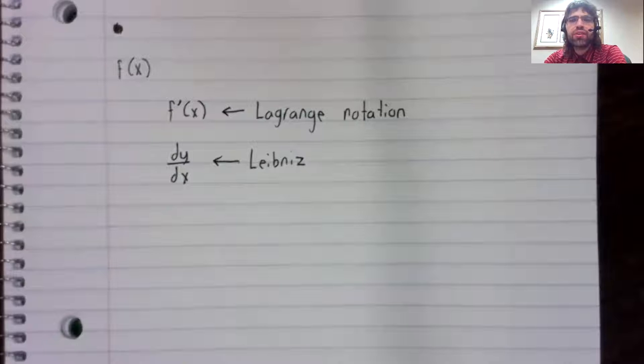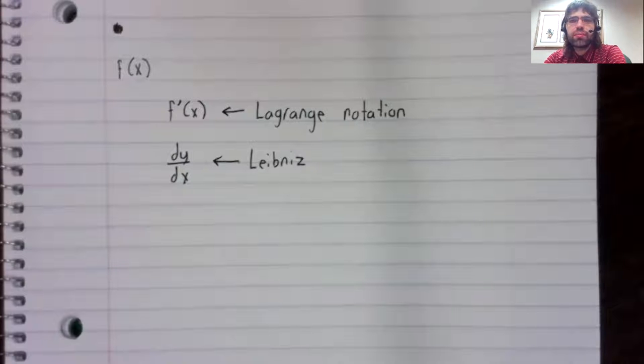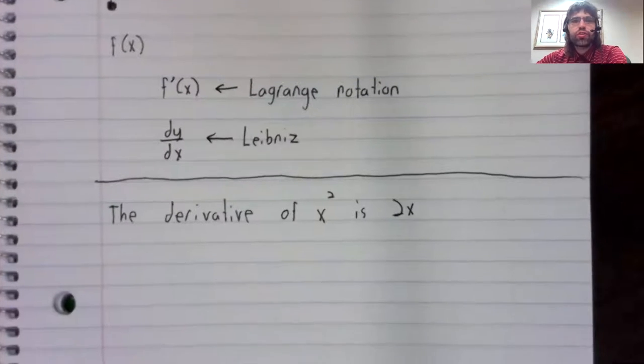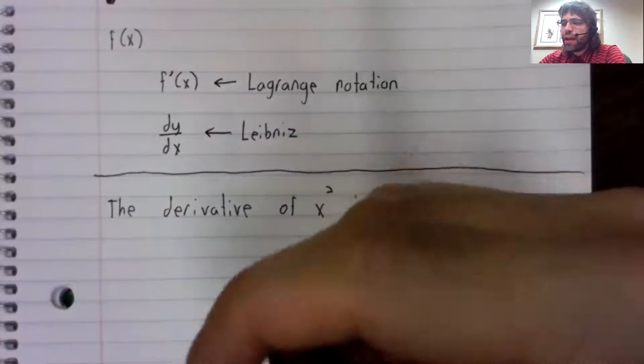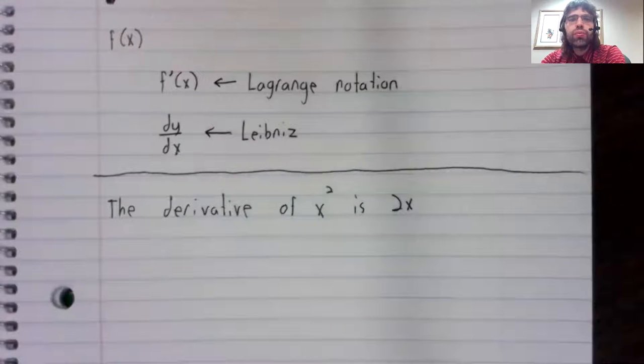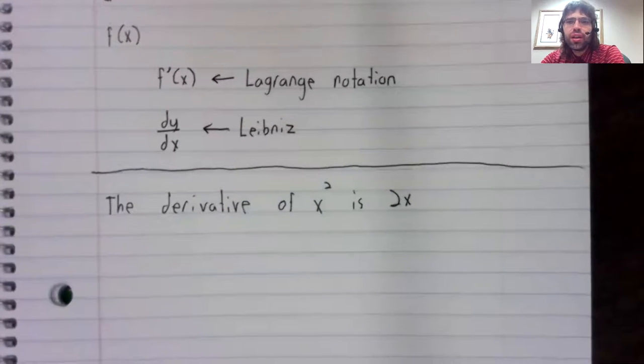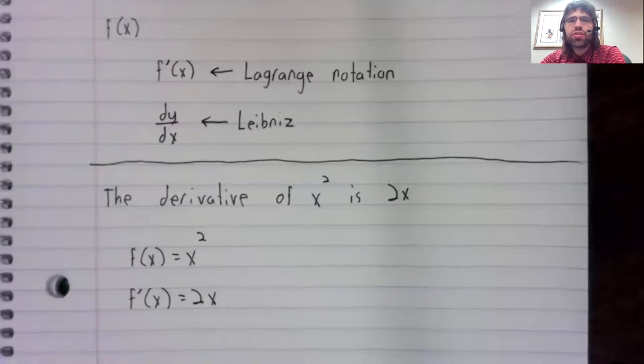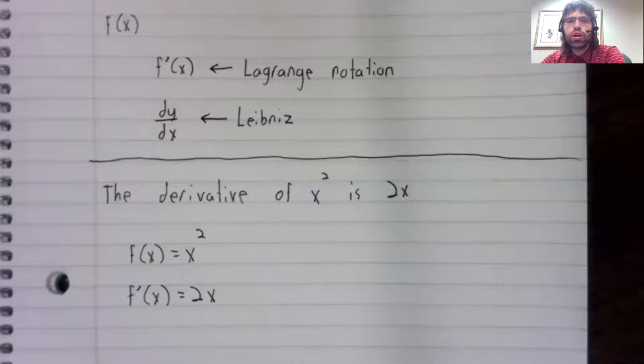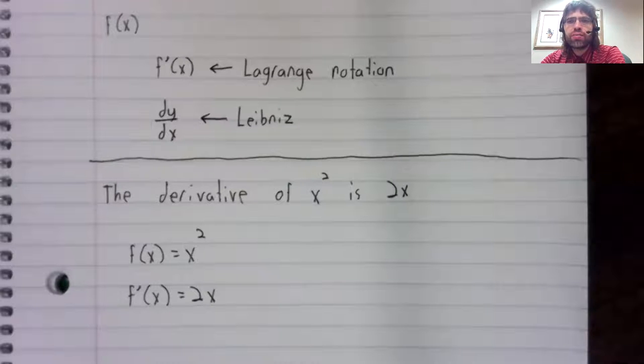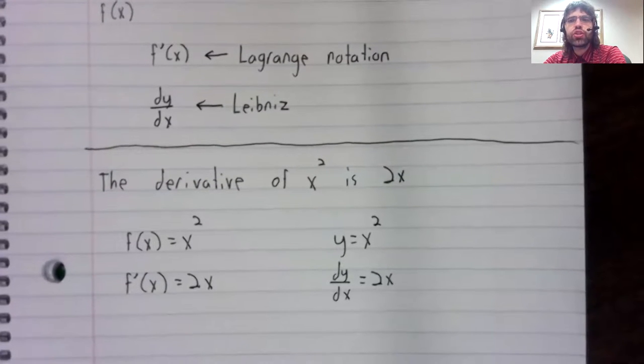Suppose that we have the statement that the derivative of x squared is 2x. A true statement, by the way. You could write that using the Lagrange notation, or you could write that using the Leibniz notation.